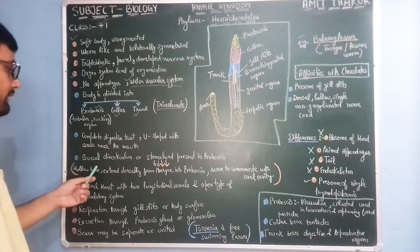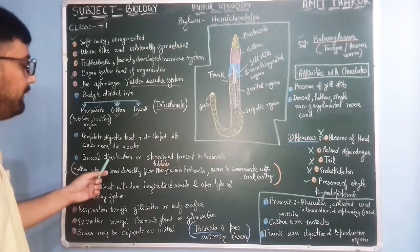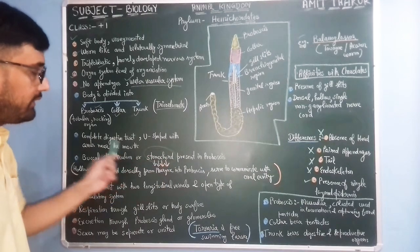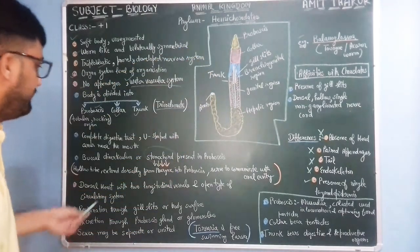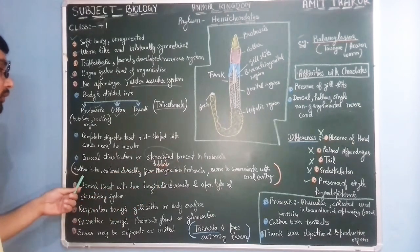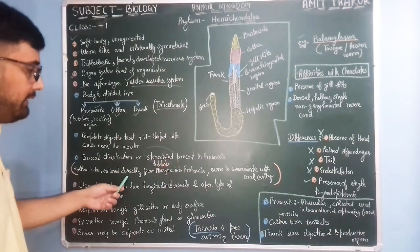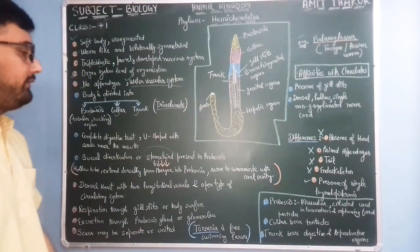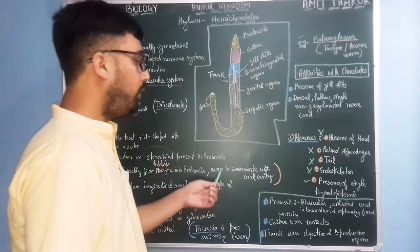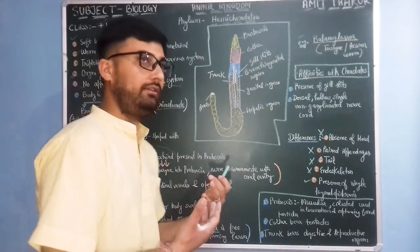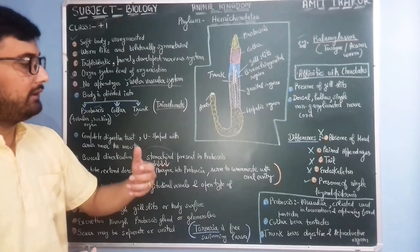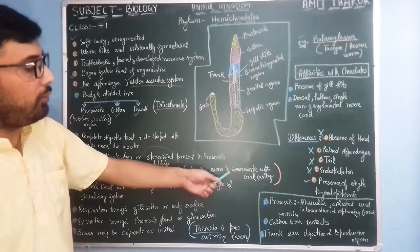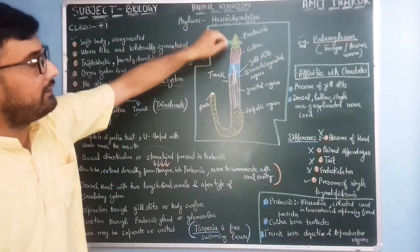In the buccal region, there is a buccal diverticulum or stomochord. There is a stomochord present in the proboscis region. Stomochord is a hollow tube which extends dorsally from the pharynx into the proboscis, and it serves as communication with the oral cavity.